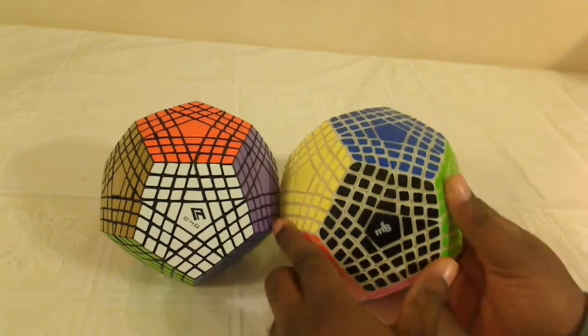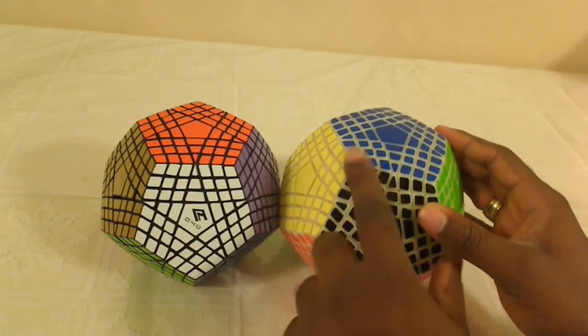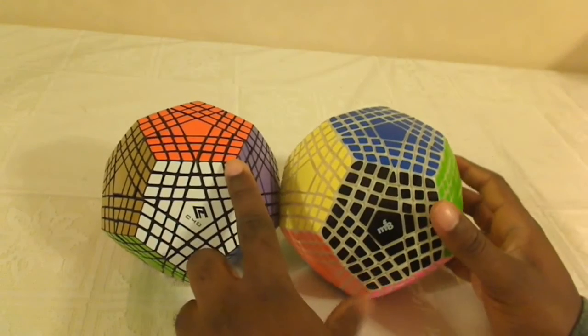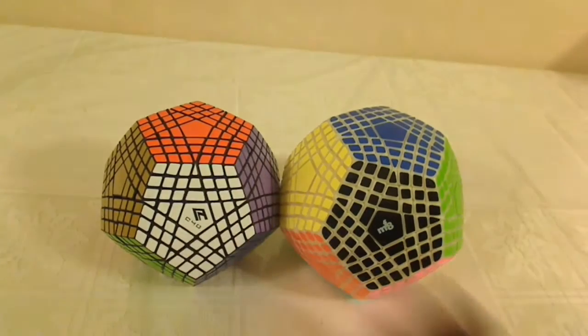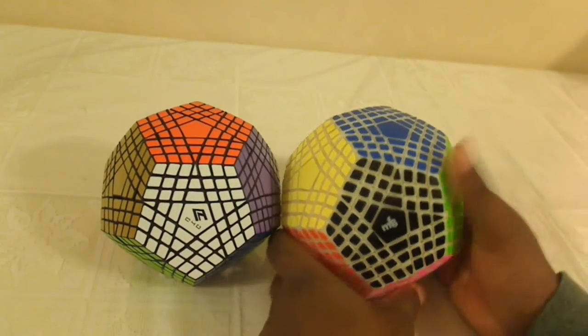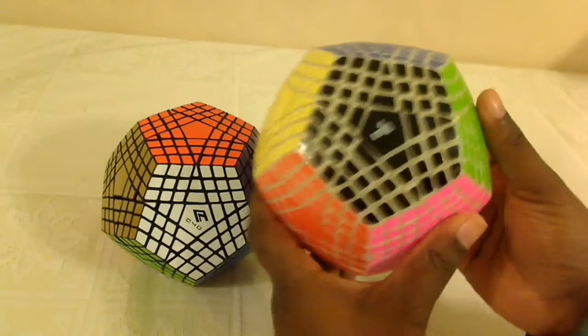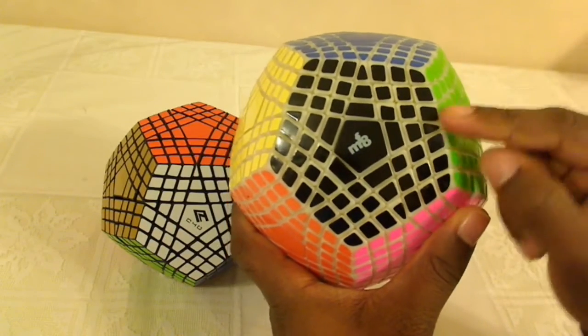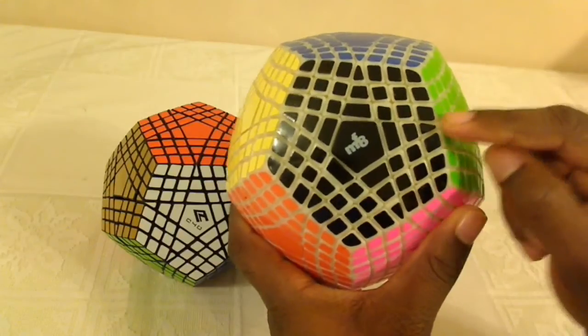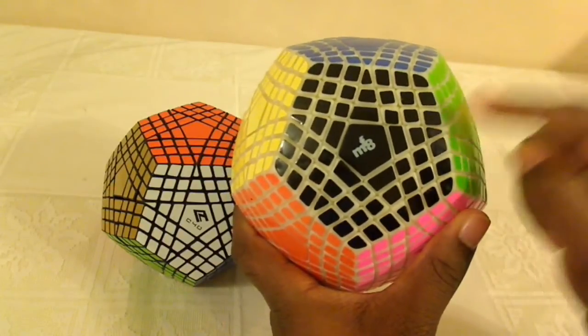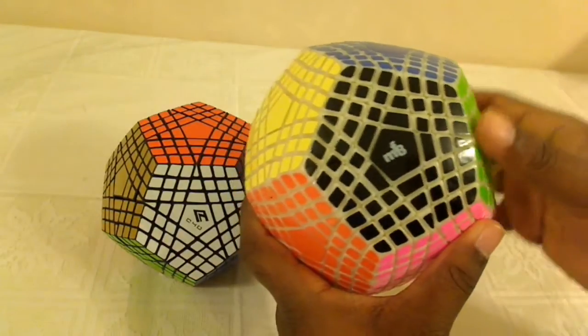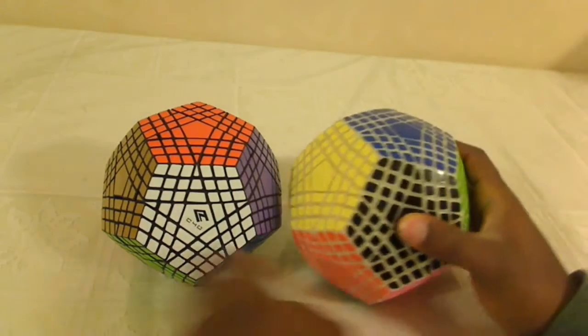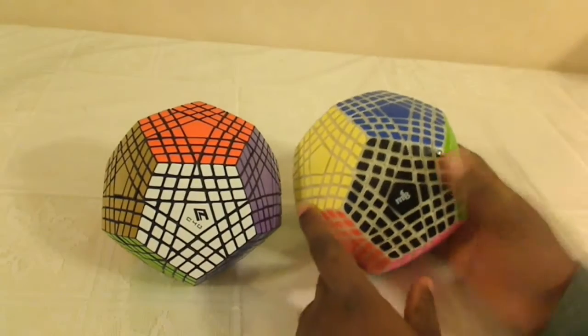Also, the MF8 one is a little bit more rounded around its edges than the Cube4U one. It's a little sharper. If anyone's wondering about the color of the MF8 Terra Minx, it's a color that's named by the company as Milk Yellow. There are actually white and black Terra Minxes available from MF8, pure white and pure black, but this one is one called Milk Yellow. And obviously, this one from Cube4U is just black.